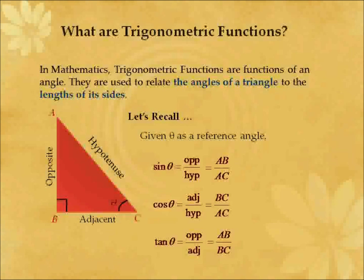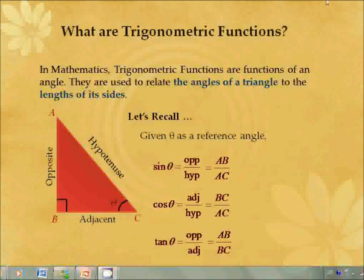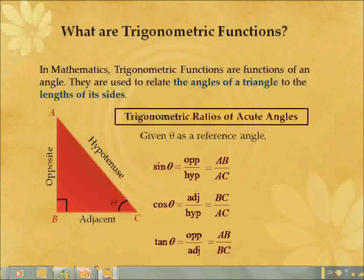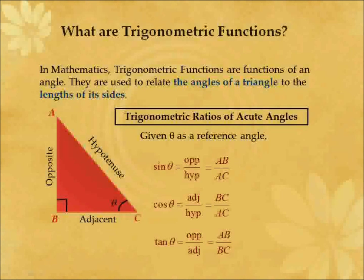In mathematics, we focus on the practical applications of trigonometry. However, in additional mathematics, we will be investigating various trigonometric functions, properties, and identities. Take note that these ratios are also known as trigonometric ratios of acute angles, where acute angles are defined as angles that are less than 90 degrees.